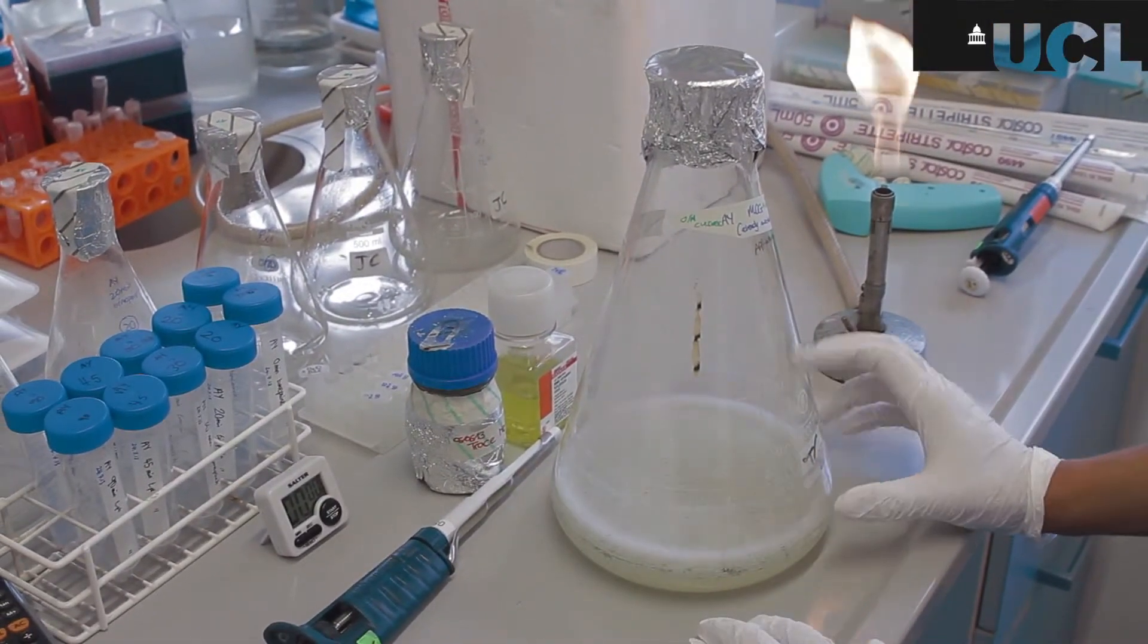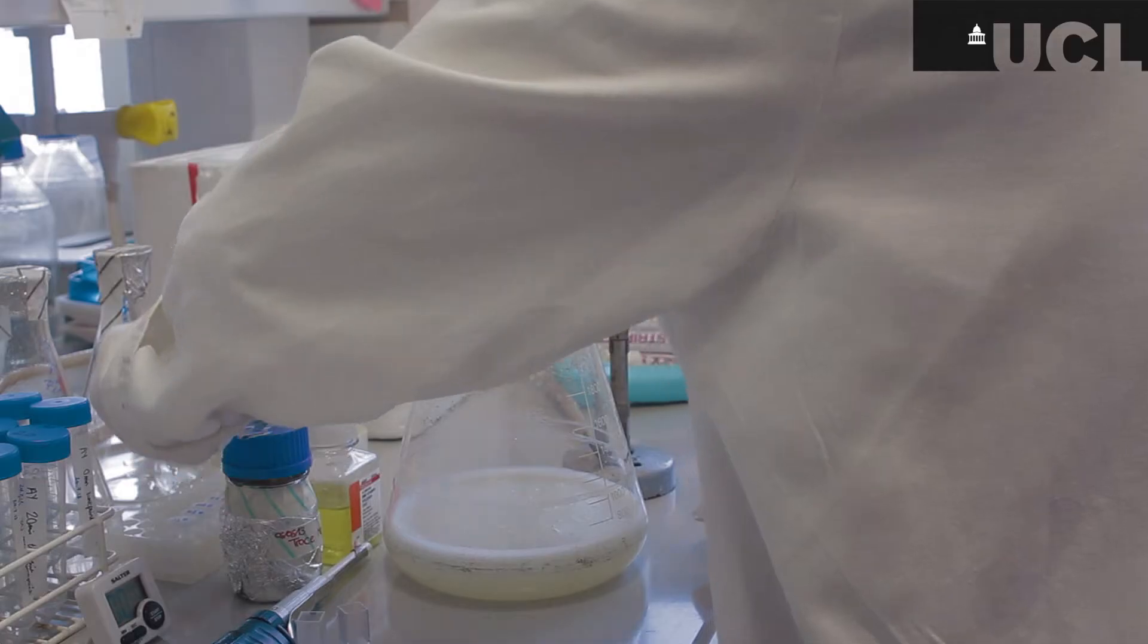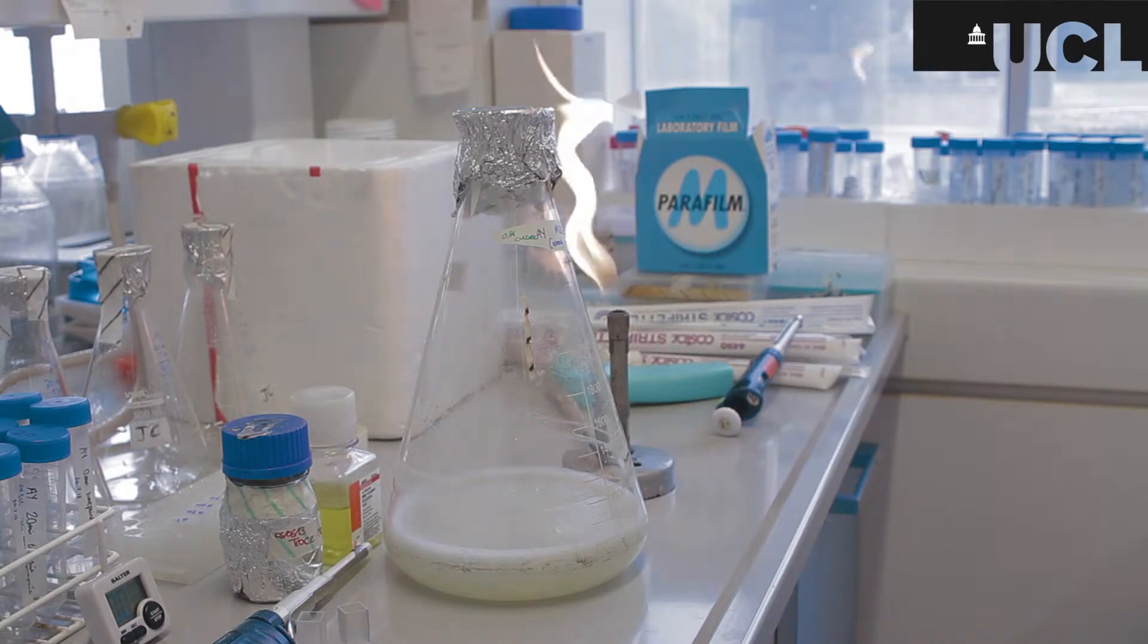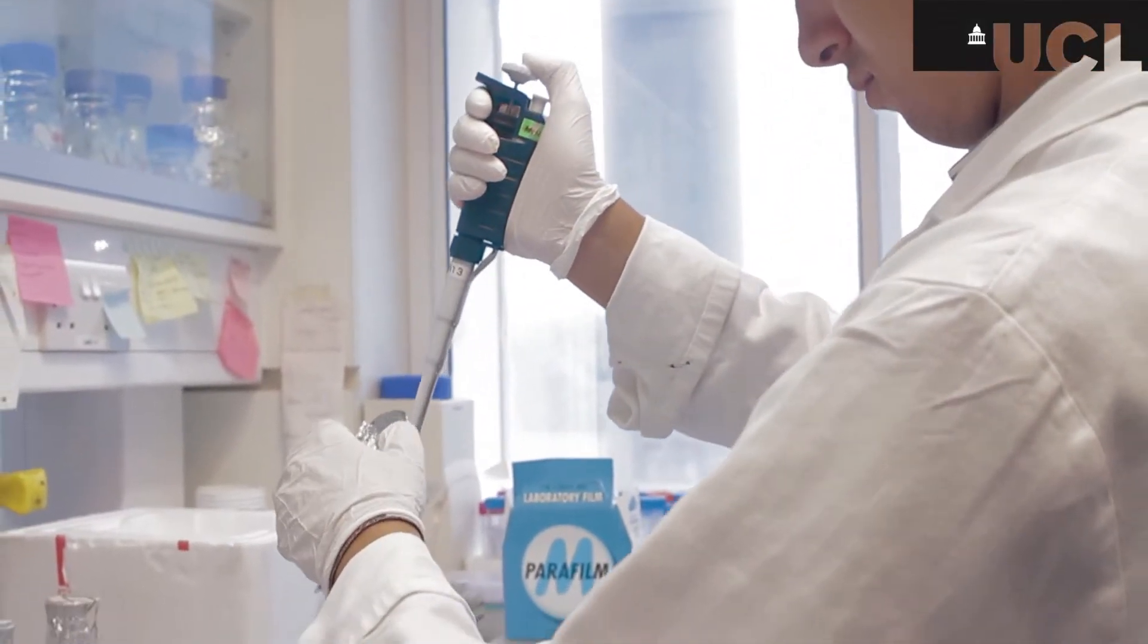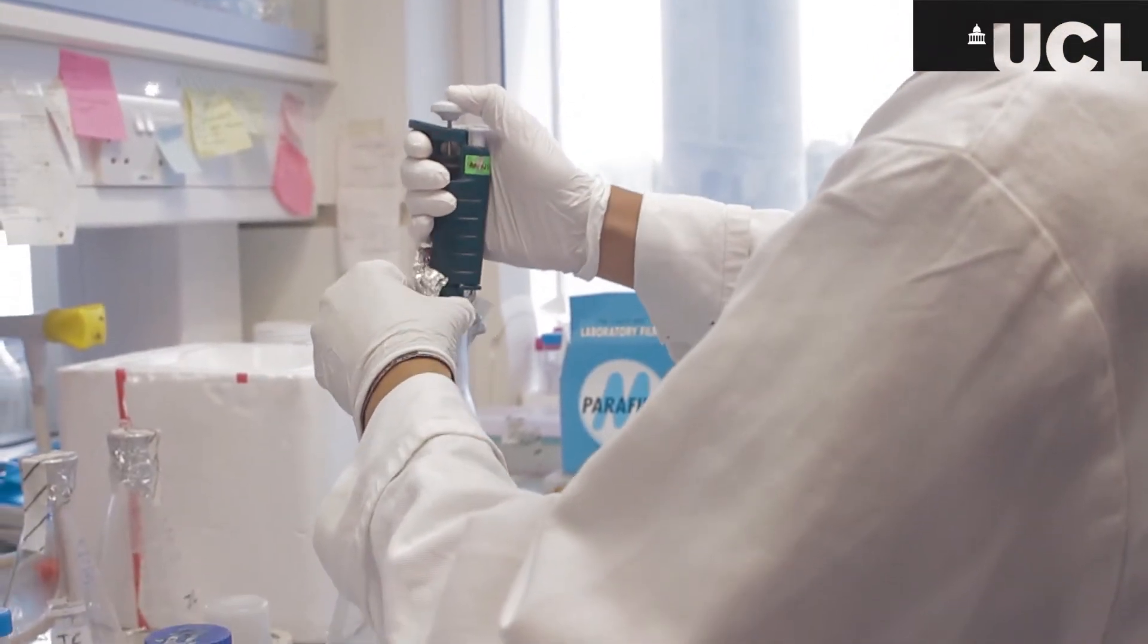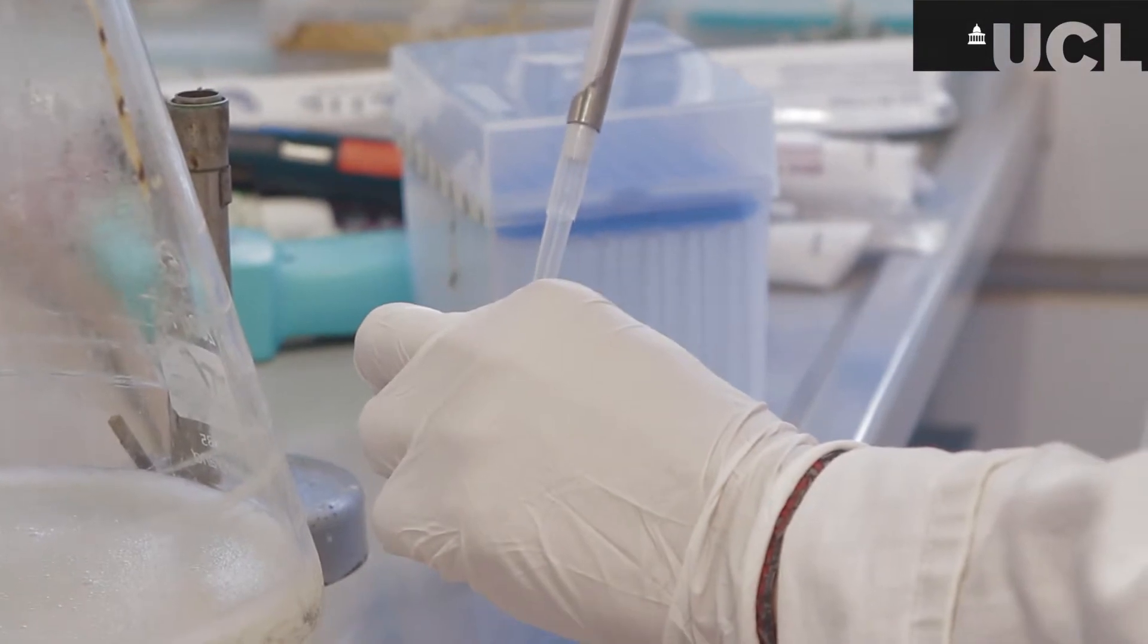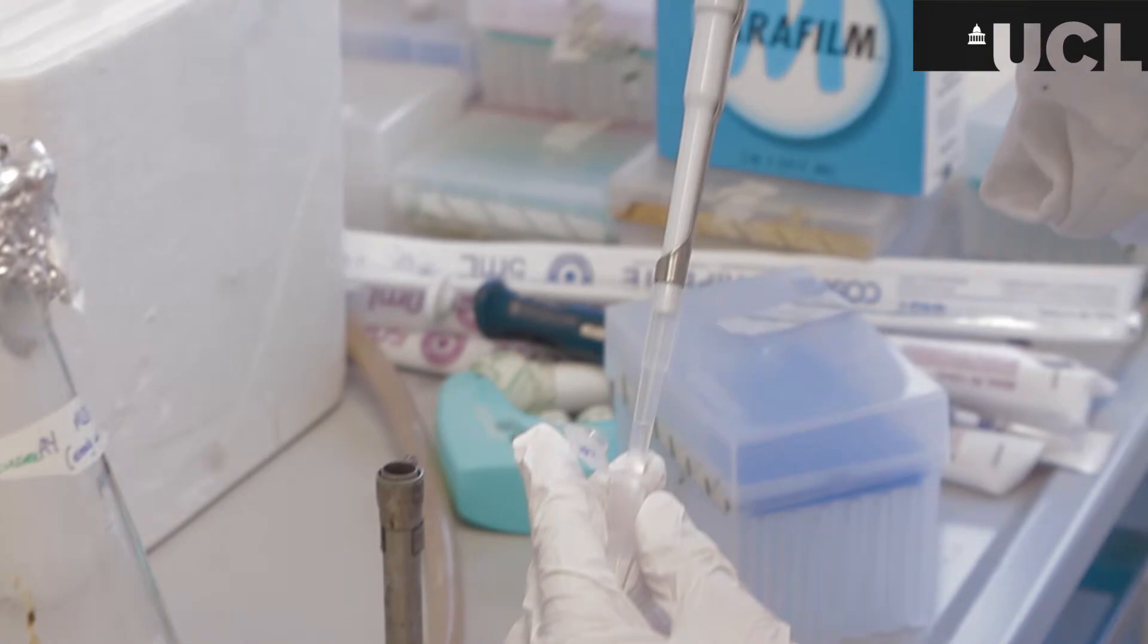Okay, so this is the overnight culture. I transformed the cells and then cultured them overnight and this is what I've taken out of the incubator. In order to assess the level of growth overnight, I'm taking an optical density measurement using a light spectrometer and that will give me a rough idea of the concentration of cells.